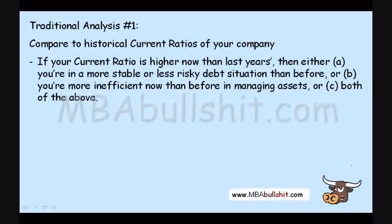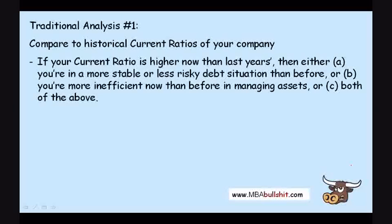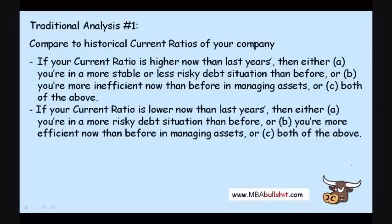A high current ratio can indicate inefficiency because you are using too many assets. If your current ratio is lower now than last year's, then either you are in a more risky debt situation than before, or you are more efficient now in managing assets, or both.